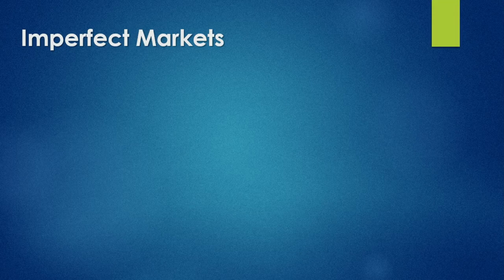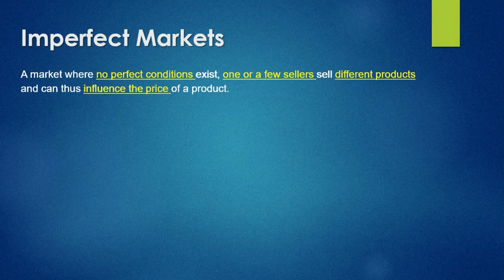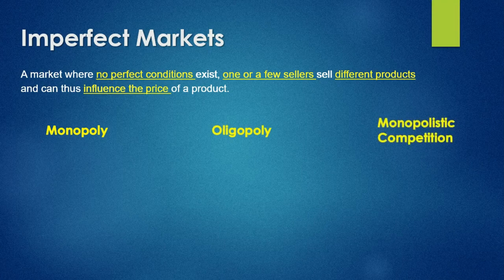So let's get into imperfect markets. What is an imperfect market? An imperfect market is where we have no perfect conditions. There are one or few sellers which sell different products and they have some sort of influence on the price of a product. We split these up into three types: a monopoly, an oligopoly, and monopolistic competition.